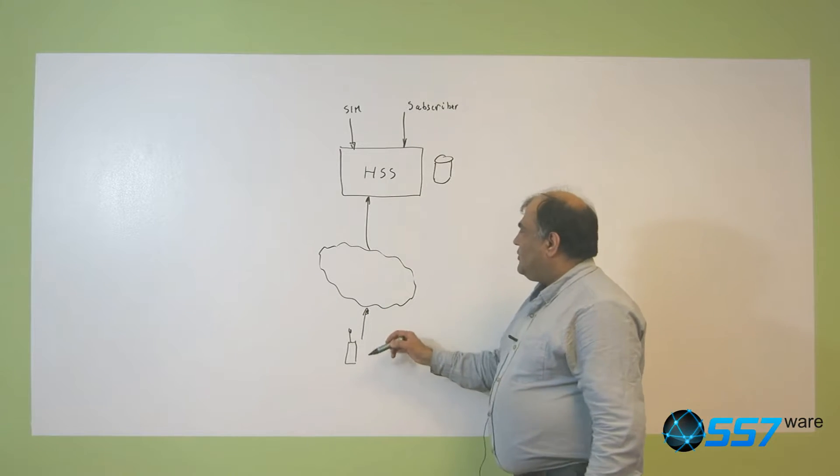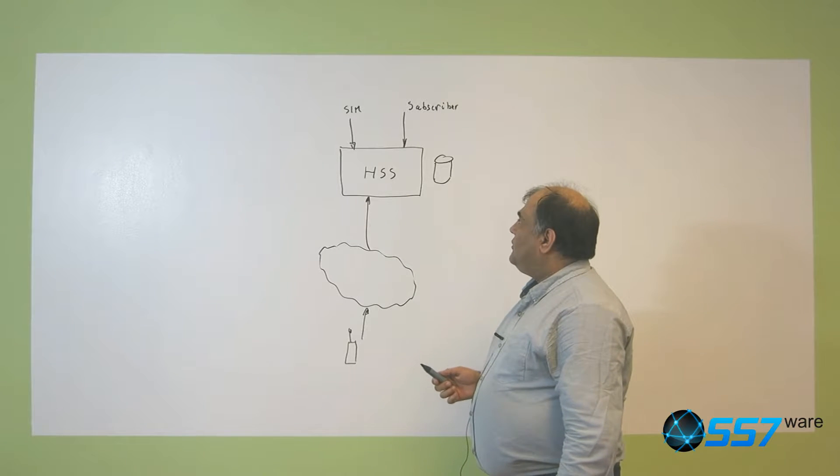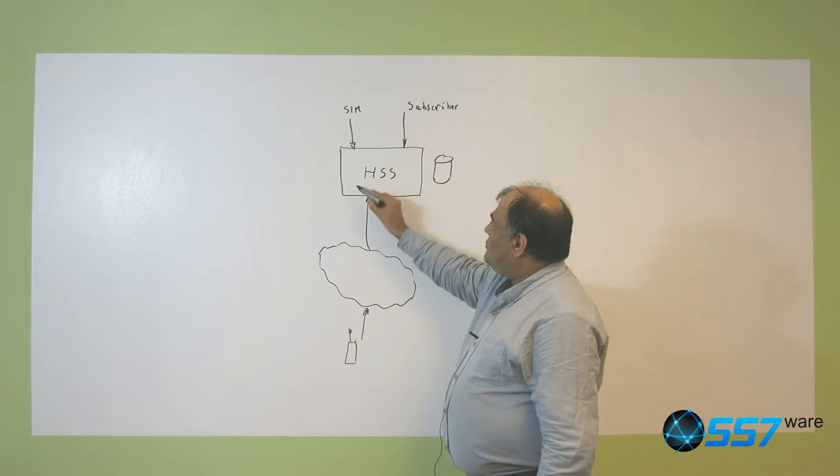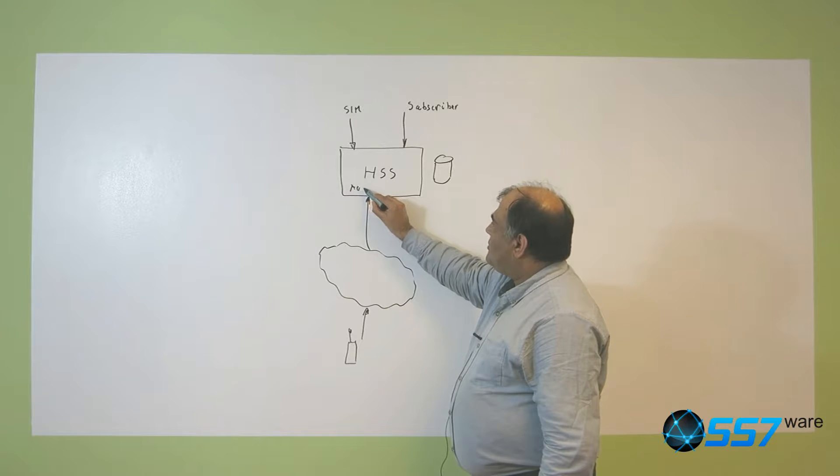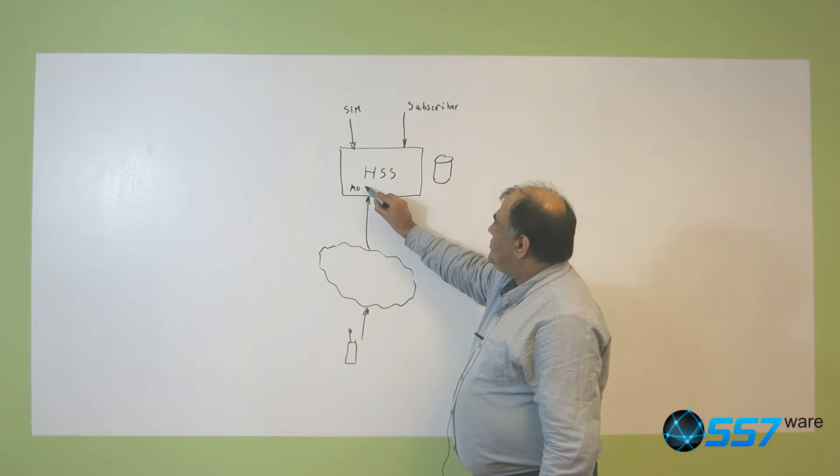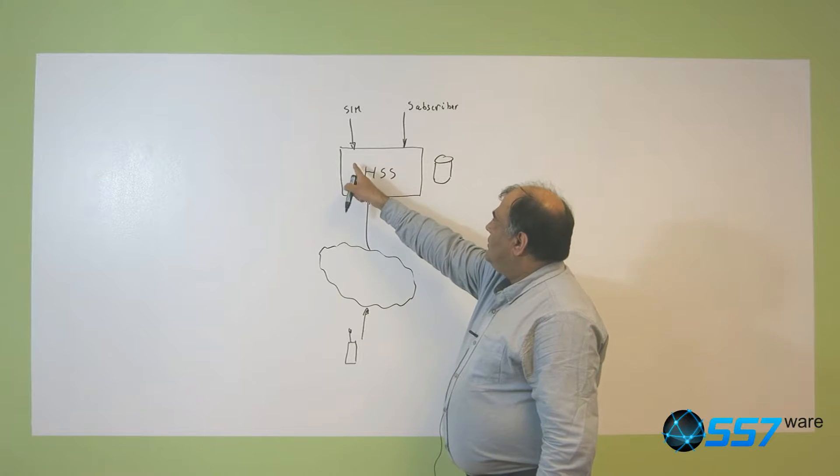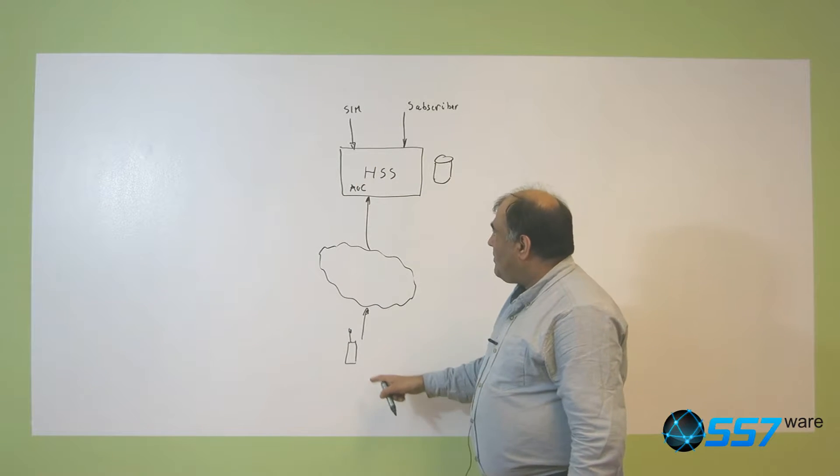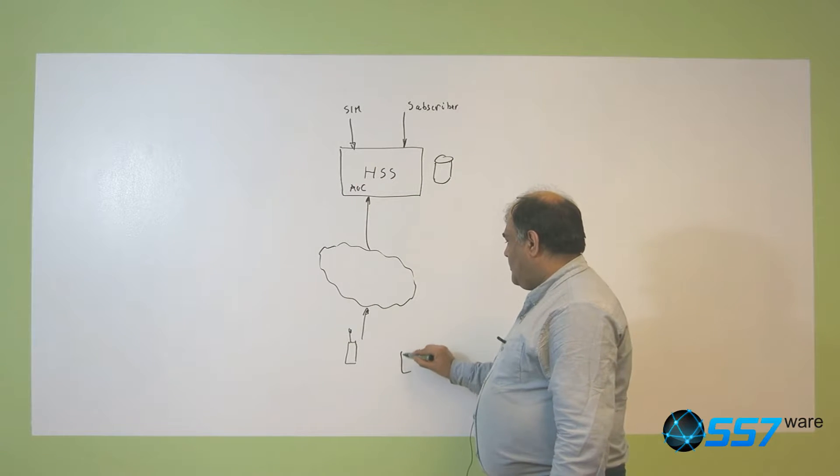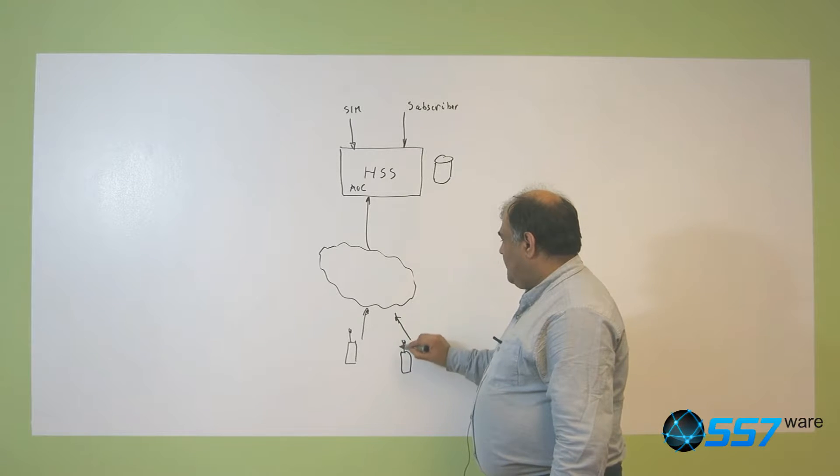The visited networks contact the home subscriber server and it will be able to authenticate using the built-in authentication center that uses the secret shared between the database and the SIM so that no other subscriber can pretend to be the same.